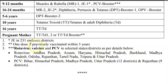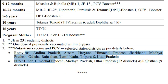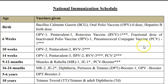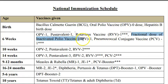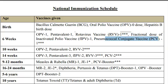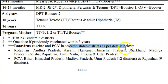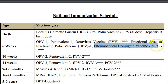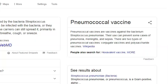Three stars means these vaccines are given in selected states and districts only — Karnataka is not included. These include rotavirus vaccine, fractional dose of inactivated polio vaccine (IPV), and pneumococcal conjugate vaccine (PCV). PCV is against Streptococcus pneumoniae, a gram-positive bacterium that causes pneumonia and meningitis.